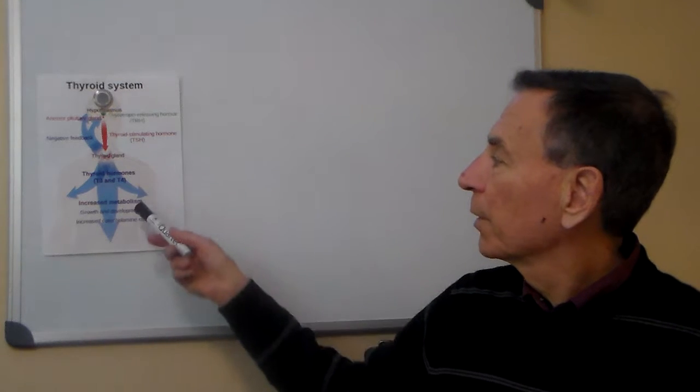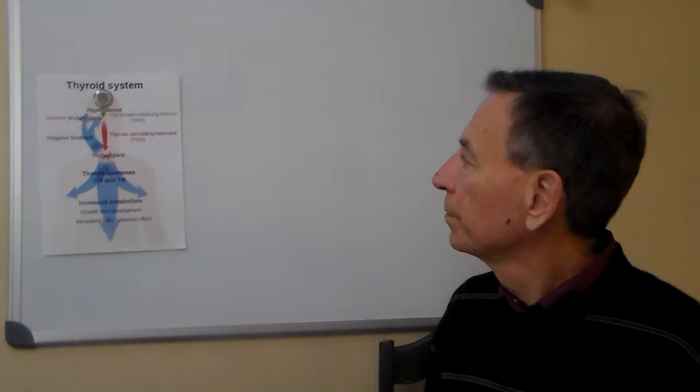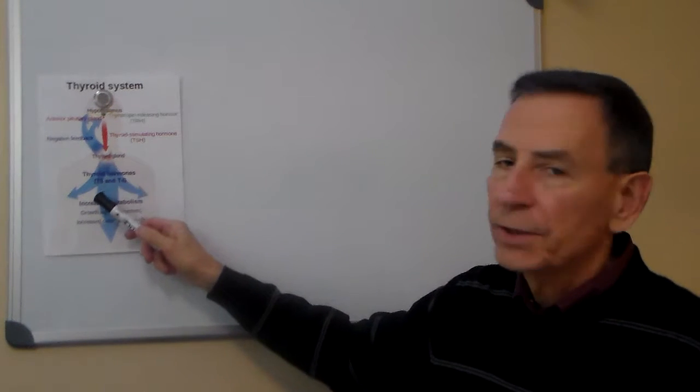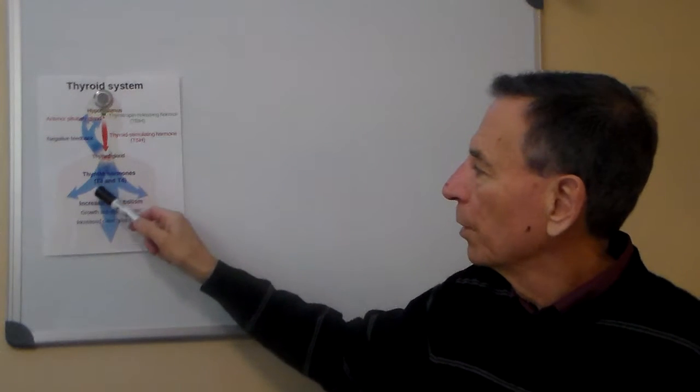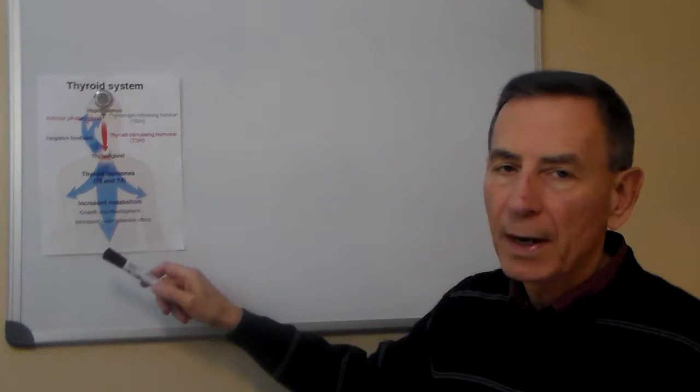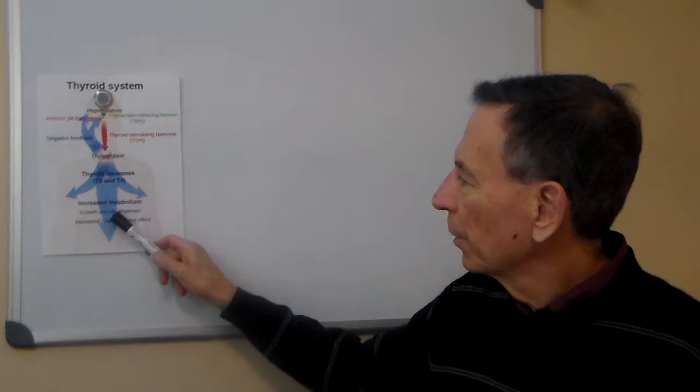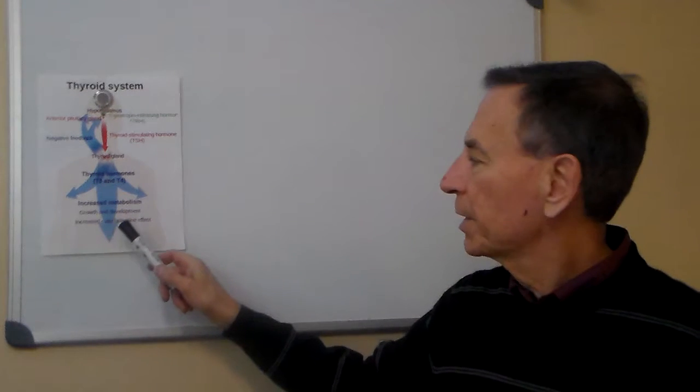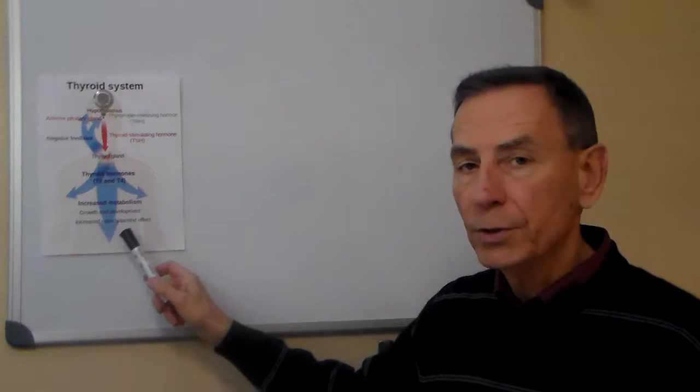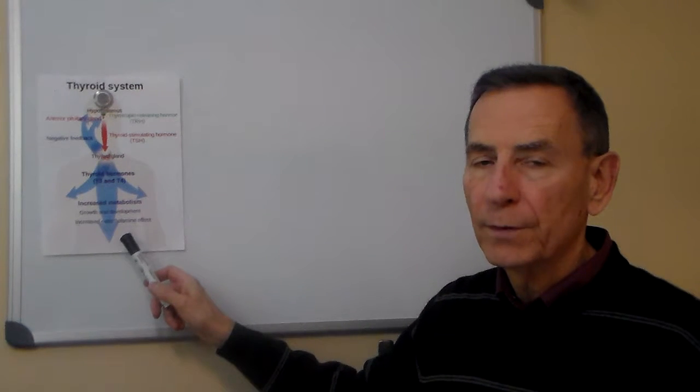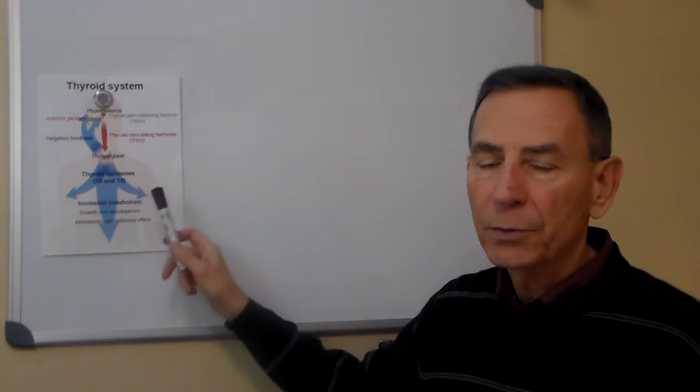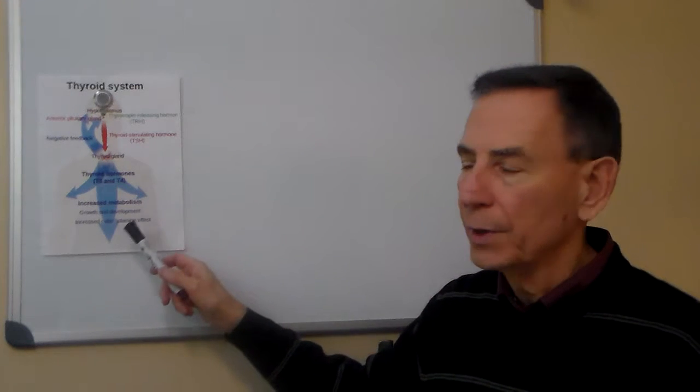This is the thyroid control system. So here we have the thyroid and it's releasing its T3 and T4 hormones into the body. And so as we do that we get increased metabolism. We have growth and development. We have increased catecholamine effect. That means it helps your adrenals to work. Your adrenals are part of your energy system. And so the thyroid and the adrenals work together to give us good energy.